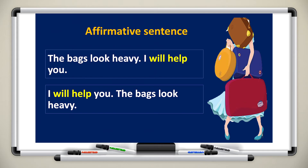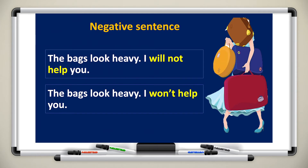In the affirmative form using 'will': 'The bags look heavy, I will help you.' The verb after 'will' is always in the infinitive. For the negative form, I say: 'The bags look heavy, I will not help you.' We added 'not' after 'will' to make it negative. The contraction is 'won't' — 'I won't help you.' 'Won't' is the abbreviation of 'will not'.